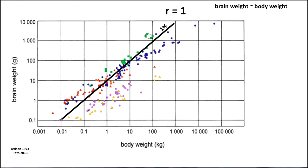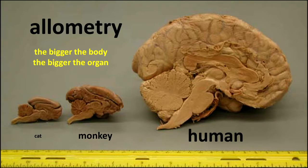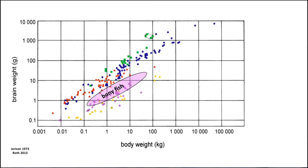Along the line r equals 1, your brain weight is proportional to your body weight. What that means is the bigger the body, the bigger the brain. This is known as allometry. The bigger the body, the bigger the brain. The bigger the body, the bigger the organ. So, the cat brain on the left, monkey has a bigger body, has a bigger brain. Humans have a bigger body, has a bigger brain. That's not surprising, that's just allometry.